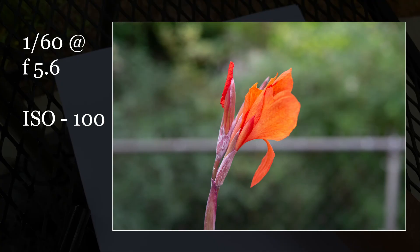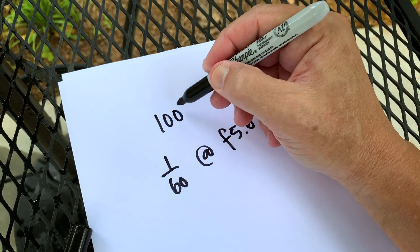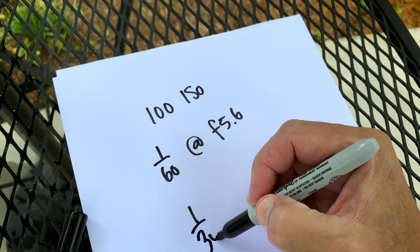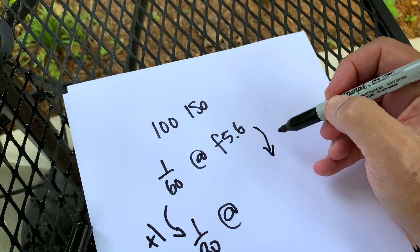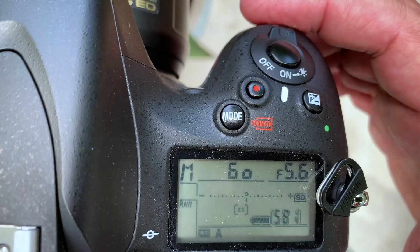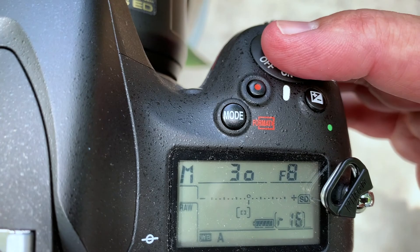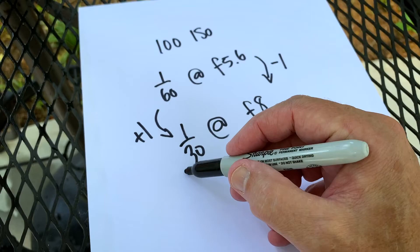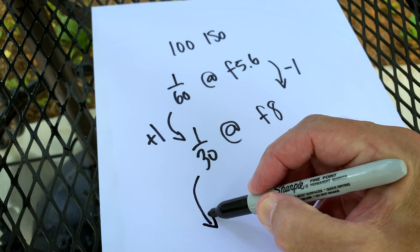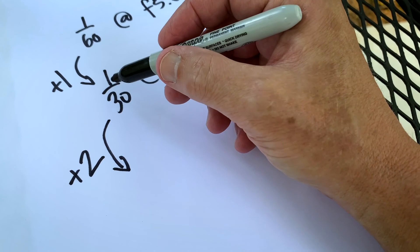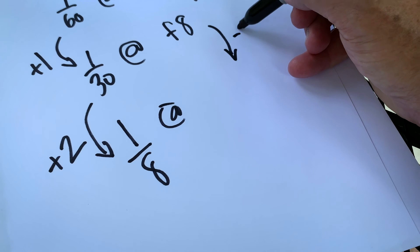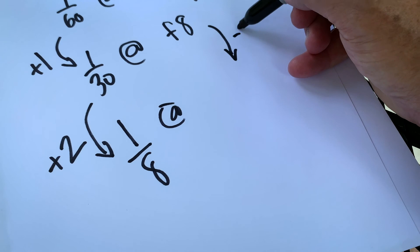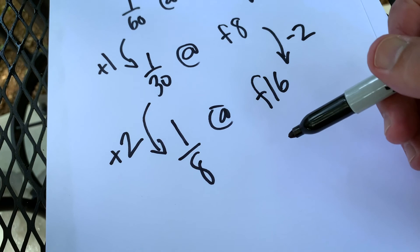That first image was 1/60th of a second at f/5.6 at ISO 100. The next one I'll take at 1/30th of a second — adding one stop of exposure on the shutter speed side — so I subtract one stop on the aperture side, which gives us f/8. For a third shot, I'll add two stops to get 1/8th of a second, and subtract two stops on the aperture side: f/11 to f/16. So the third shot is 1/8th of a second at f/16. All of these should be equivalent exposures.